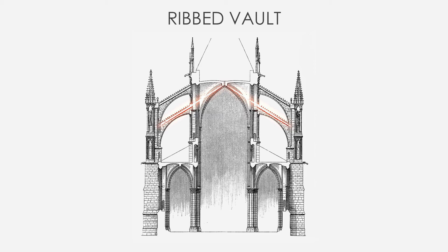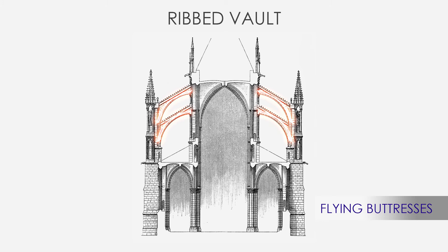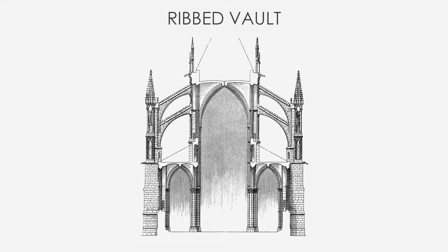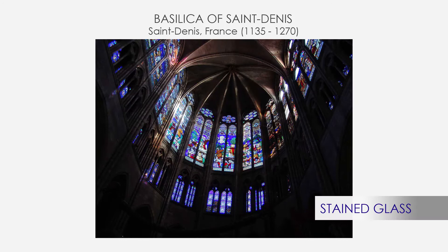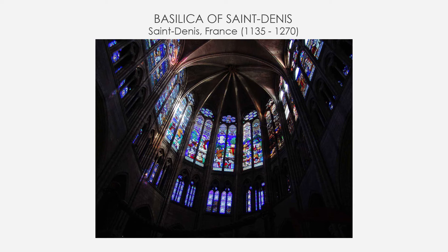These outward thrusts are counterbalanced by heavy flying buttresses outside the walls, surmounted by pinnacles that are not mere decorations but help the buttresses have more strength by adding weight. Since the weight was supported by a skeleton of pillars and buttresses, the walls themselves could be much higher and thinner, making possible the intense usage of stained glass — another beautiful characteristic of Gothic cathedrals.